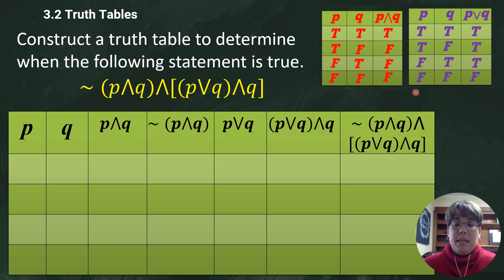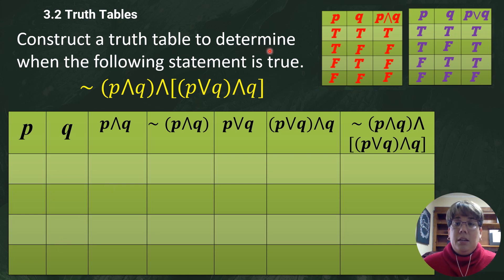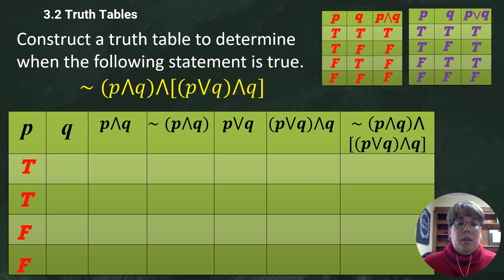My suggestion to you is have your truth tables — the AND chart and the OR chart — handy and keep them as references. I'll show you how I walk through the logic process in my head as I'm completing the truth table. The first thing I always do is start with p's and q's, and notice they are always the same for every single truth table.